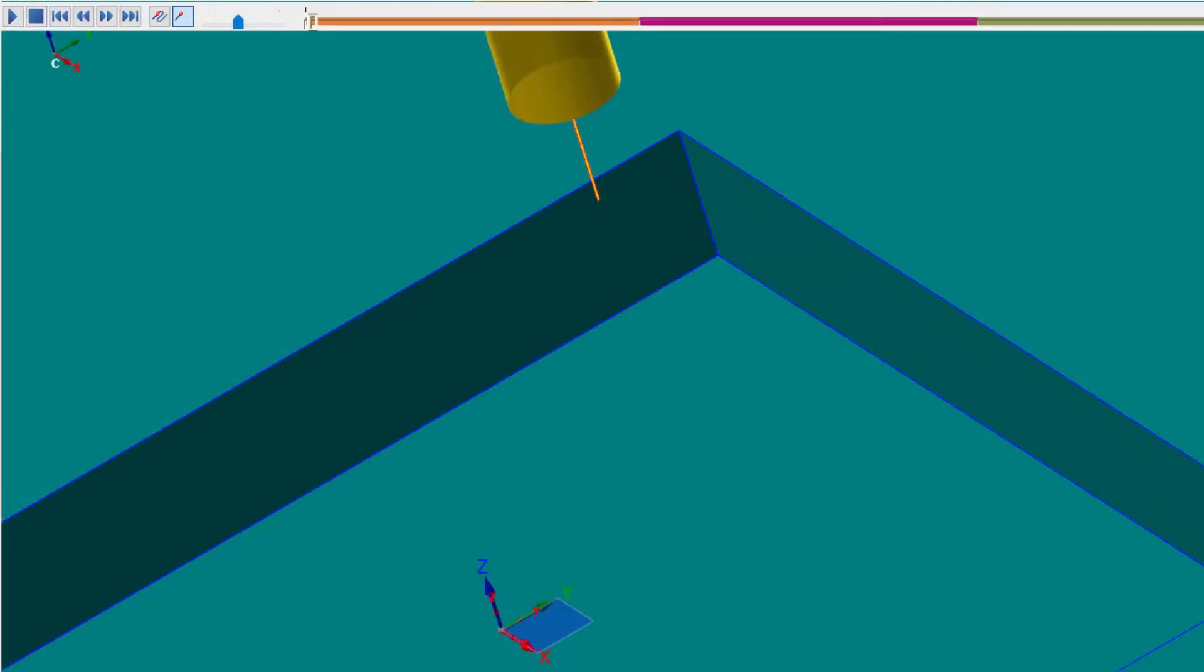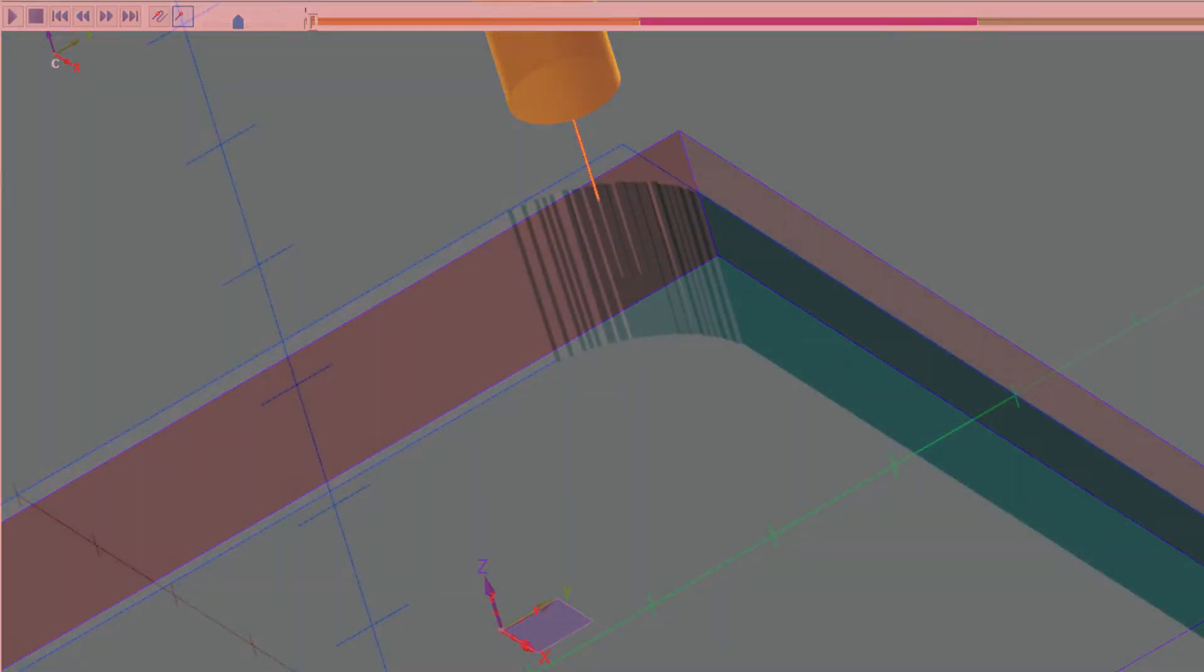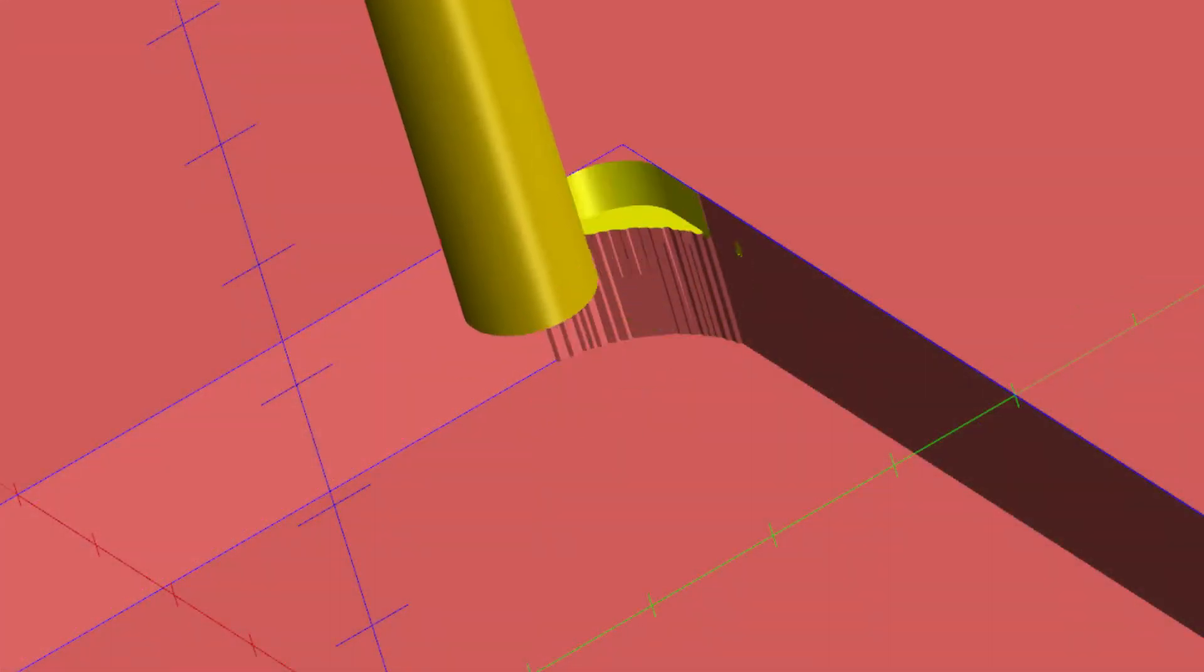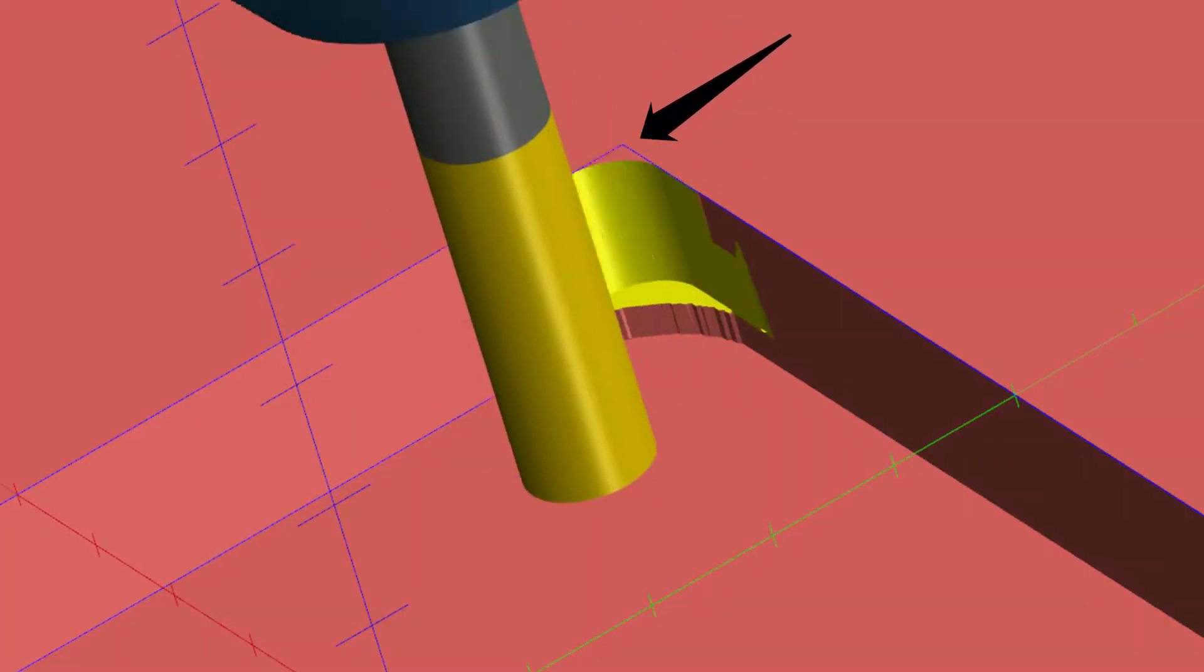This is a typical model we receive, and as you can see, it has sharp corners. Making sharp corners with round cutting tools is difficult. You can come close on CNC machines, but you'll never quite achieve the perfectly sharp corner.